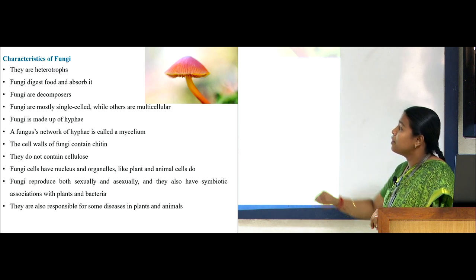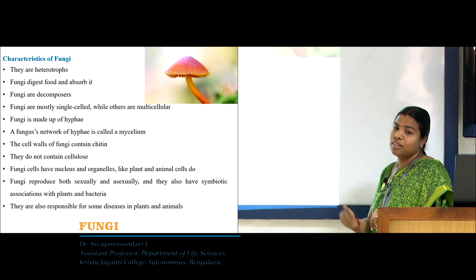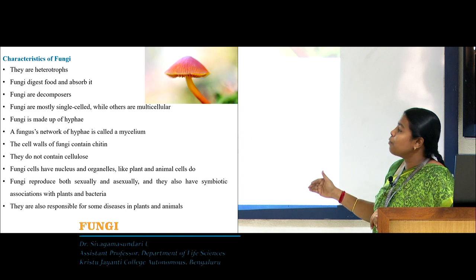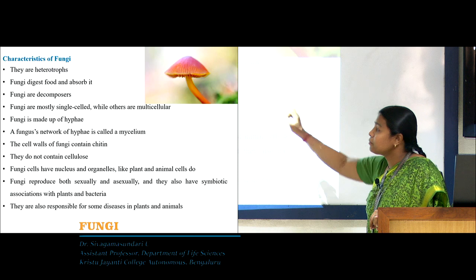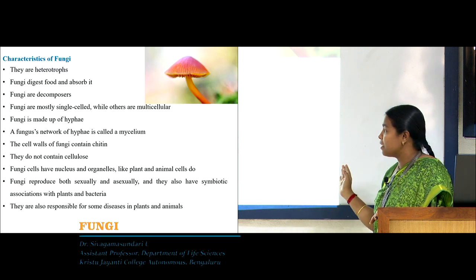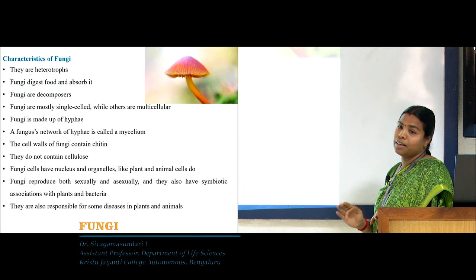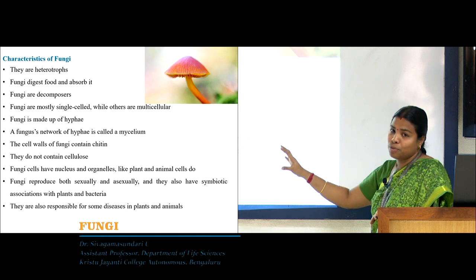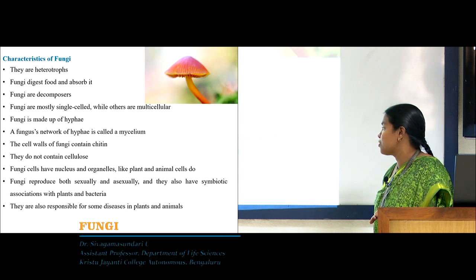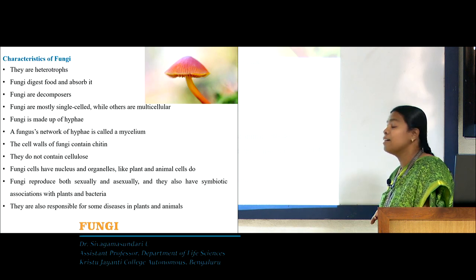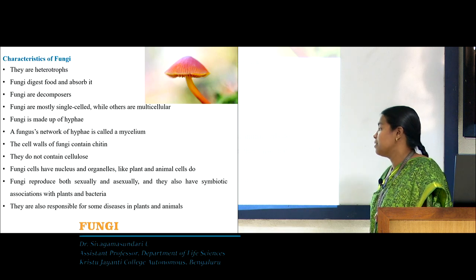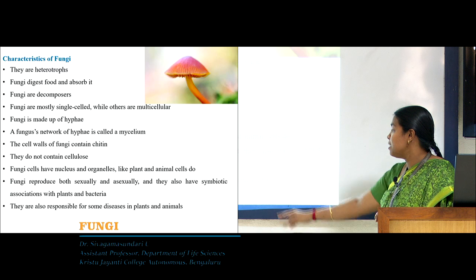The entire body of fungi is made up of hyphae — minute filament-like structures. The interwoven network of hyphae is called mycelium. The cell wall of fungi is completely made up of chitin, not cellulose. Fungal cells have a nucleus as they are eukaryotic organisms with organelles like plants and animals. Fungi reproduce both sexually and asexually; during unfavorable conditions they prefer vegetative reproduction. Fungi also have symbiotic associations — the best known being lichen (algae and fungi) — and some parasitic fungi cause diseases in plants and animals.